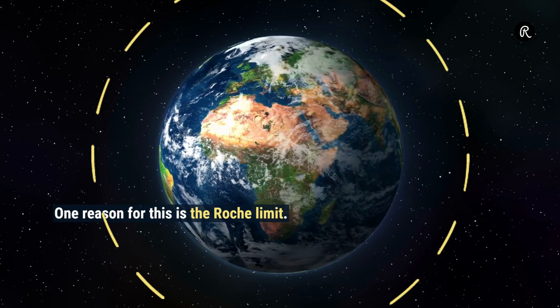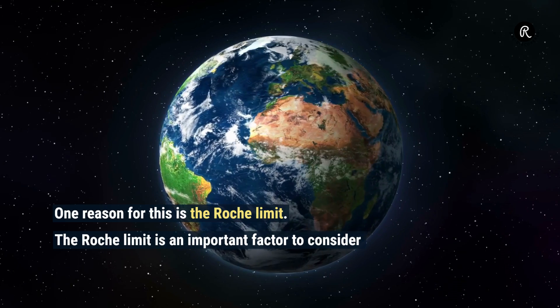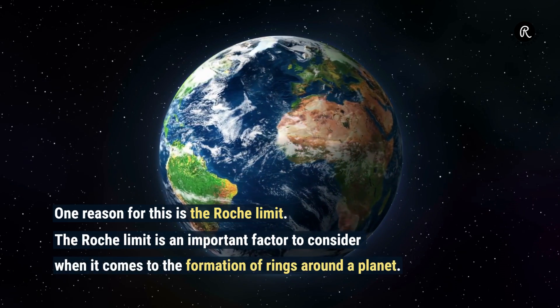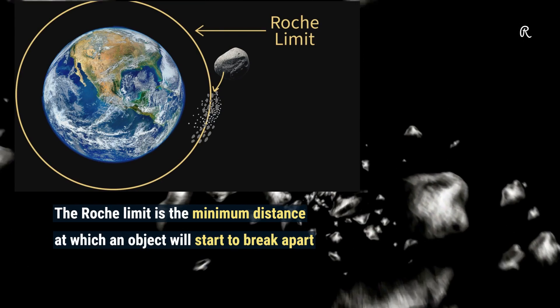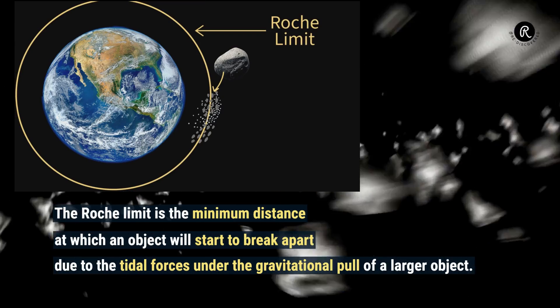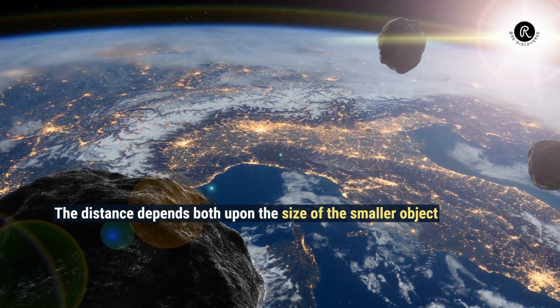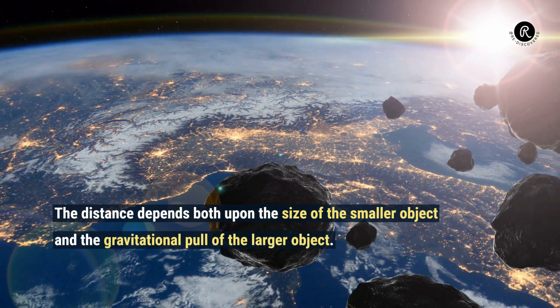One reason for this is the Roche limit. The Roche limit is an important factor to consider when it comes to the formation of rings around a planet. The Roche limit is the minimum distance at which an object will start to break apart due to the tidal forces under the gravitational pull of a larger object. The distance depends both upon the size of the smaller object and the gravitational pull of the larger object.